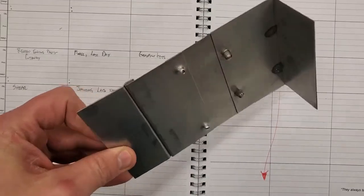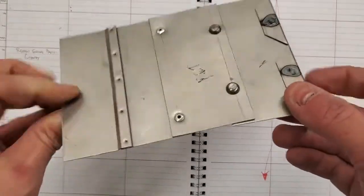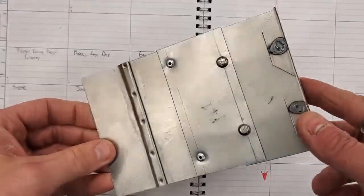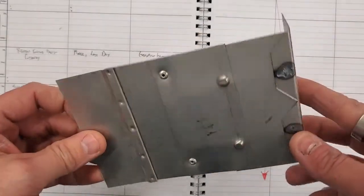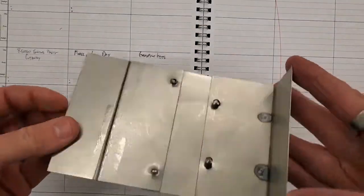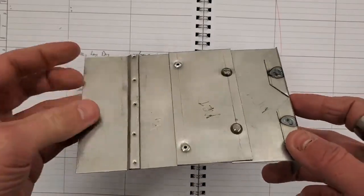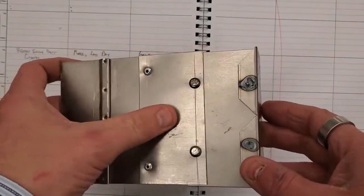So our first metal project is going to be this joining lab. We take a big piece of metal, cut it up into a few small chunks, and then join the pieces back together.